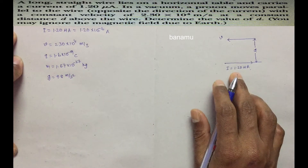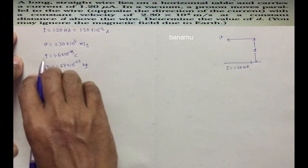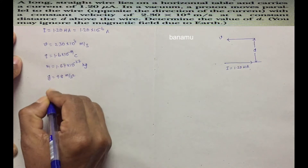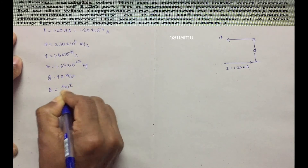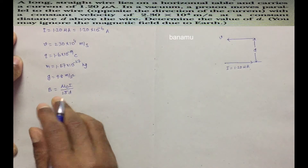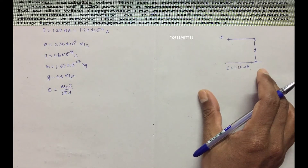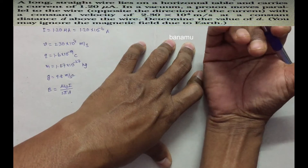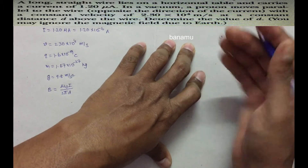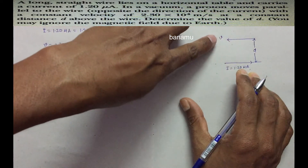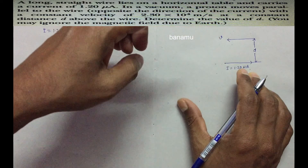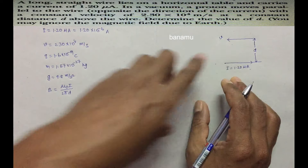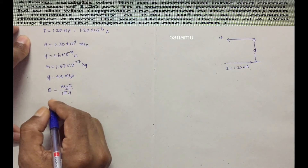First, we calculate the magnetic field due to the long straight wire at a point d. The magnetic field is B equal to mu-zero I by 2 pi d. The direction of the magnetic field is perpendicular to the current carrying conductor according to the right-hand rule. Therefore, the direction of the magnetic field and the direction of the velocity are perpendicular to each other, since the current carrying conductor and the velocity of the proton are parallel to each other.